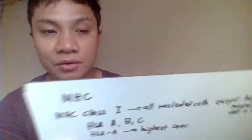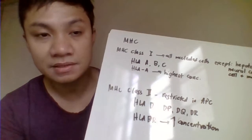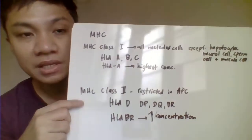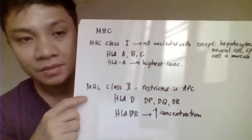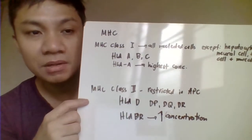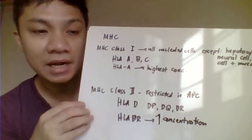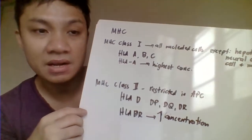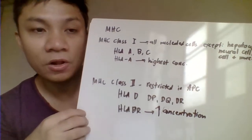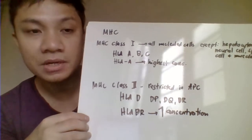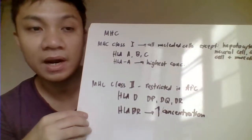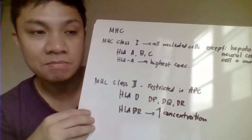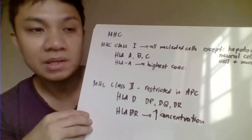There are different factors we need to consider for a successful transplantation. The first one is the major histocompatibility complex, which includes class 1 and class 2. Class 1 can be found in all nucleated cells in our body, and the majority will be found in our lymphocytes.